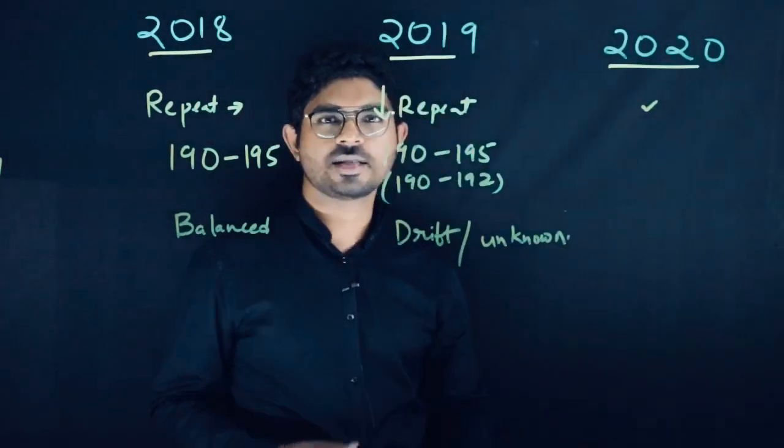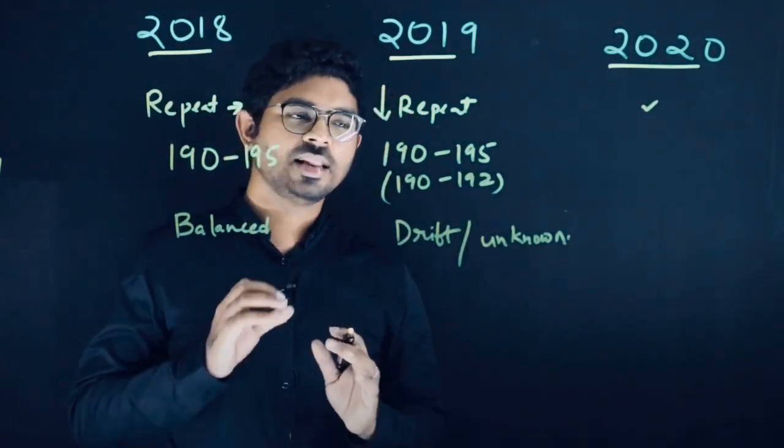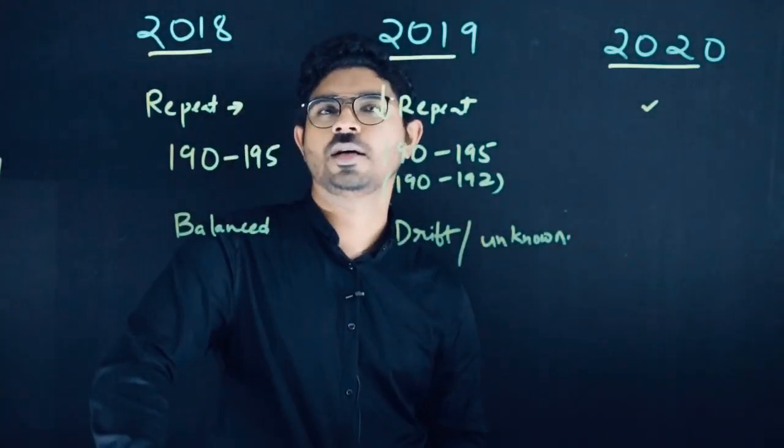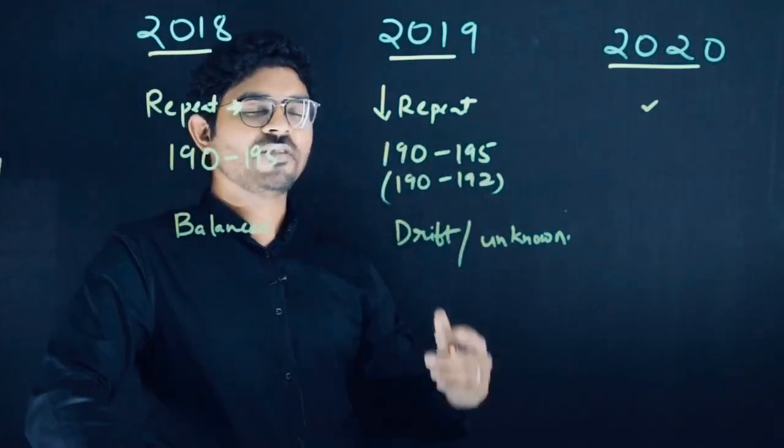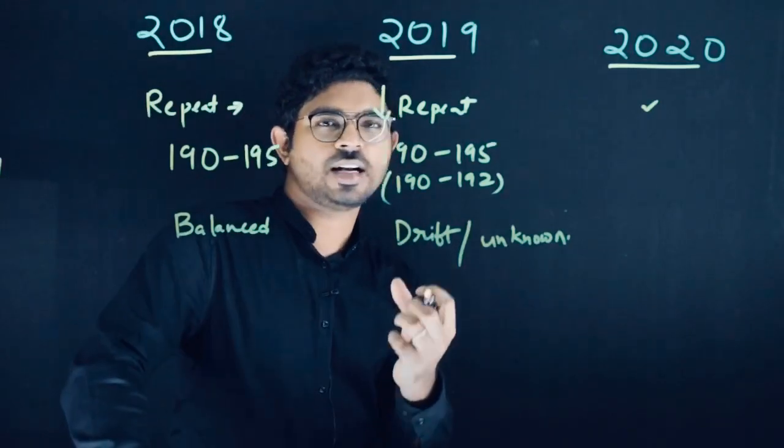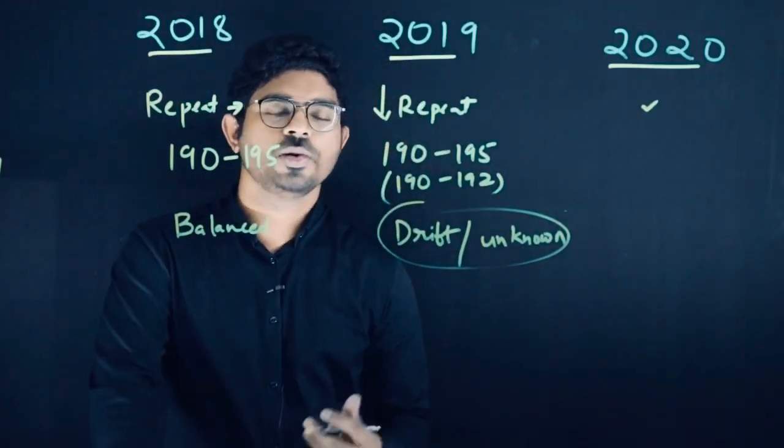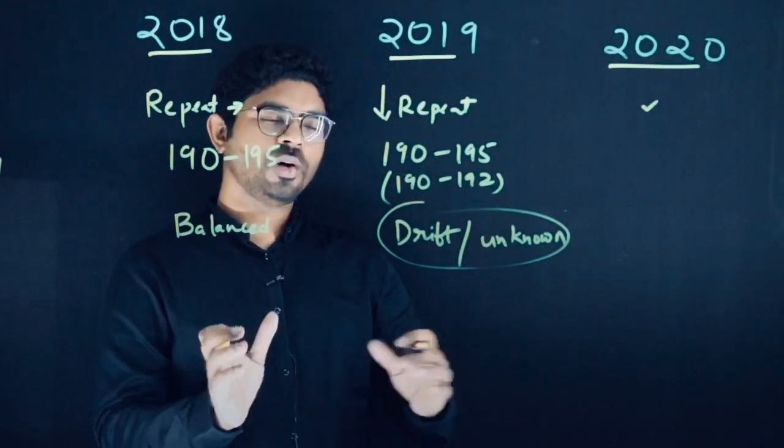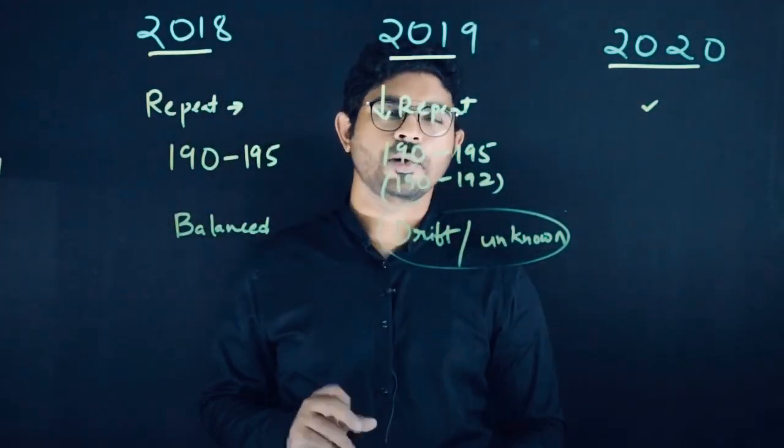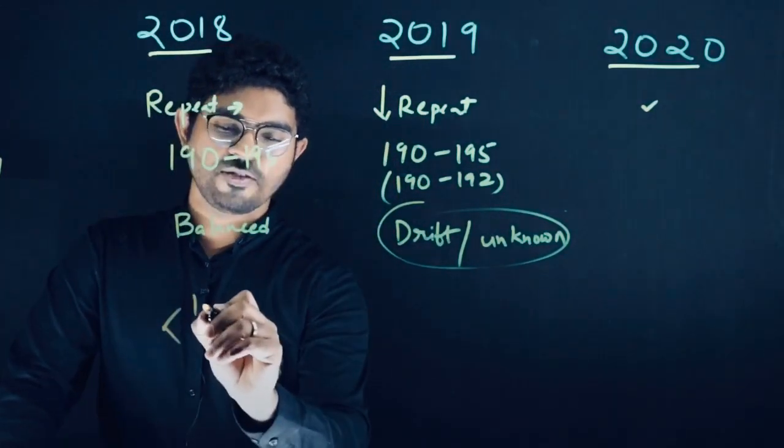As we've already discussed about integrated questions, by seeing an integrated question you cannot judge that this particular question is from this particular topic. For example, they're giving the drug of choice for trigeminal neuralgia upon giving a long case history. You cannot judge whether it's a pharmacology question or something else. Most questions are drifted questions or called unknown questions—you don't know the exact reference or where to segregate this particular question.